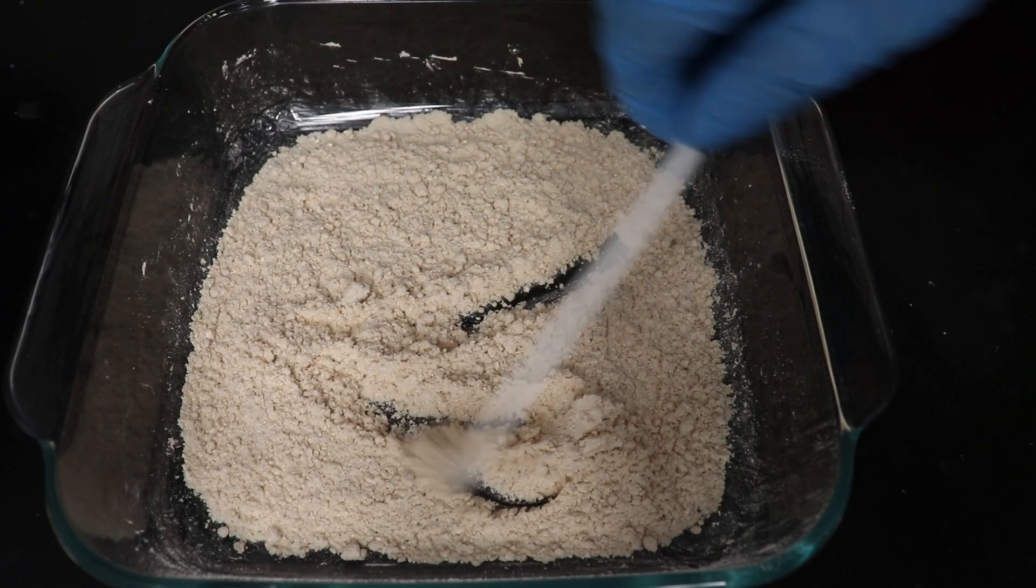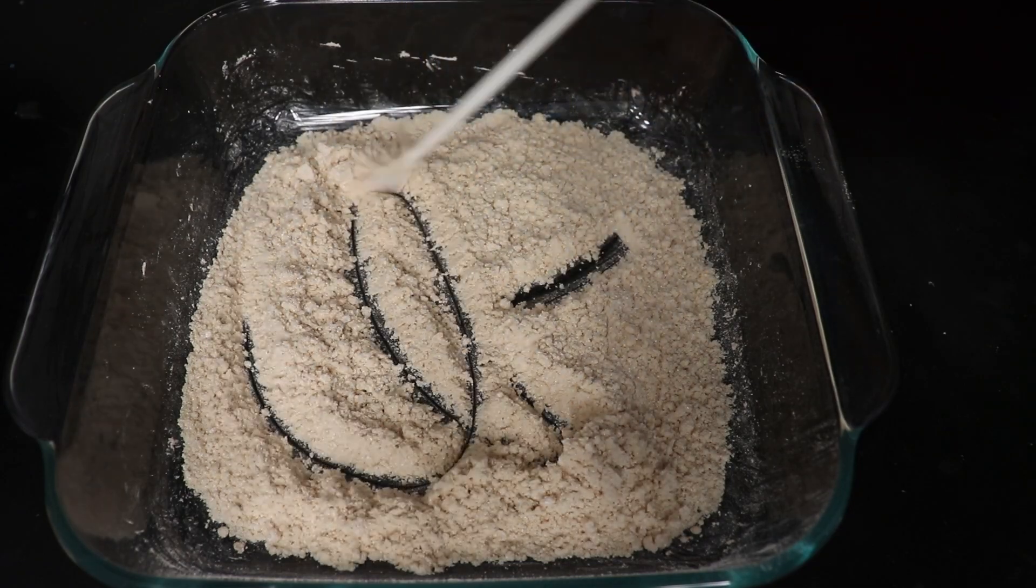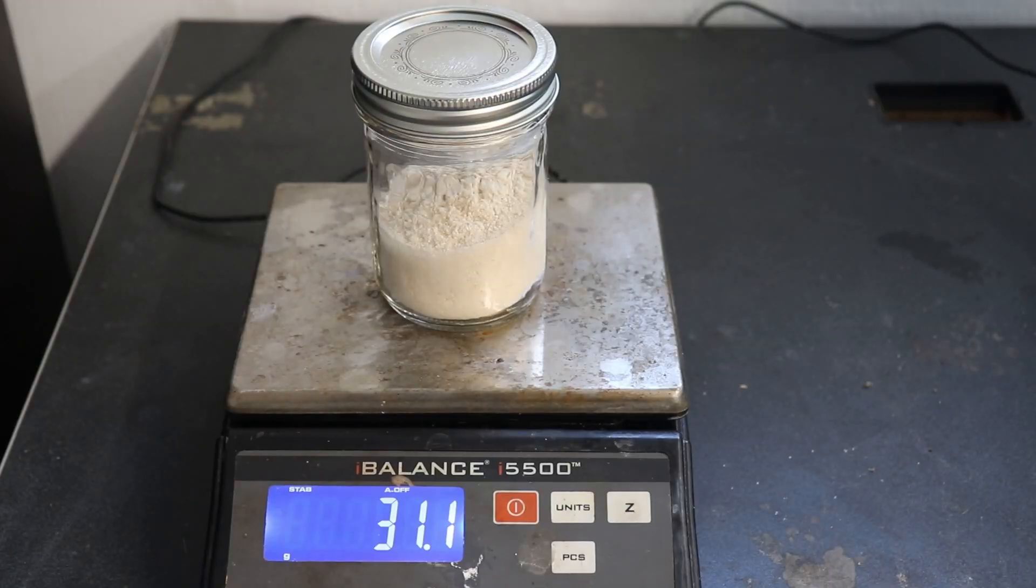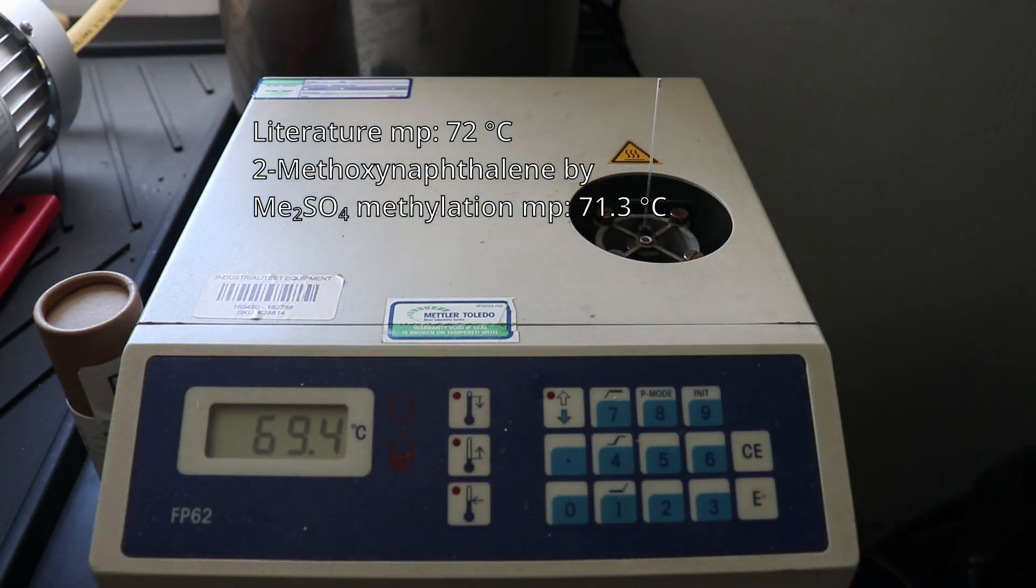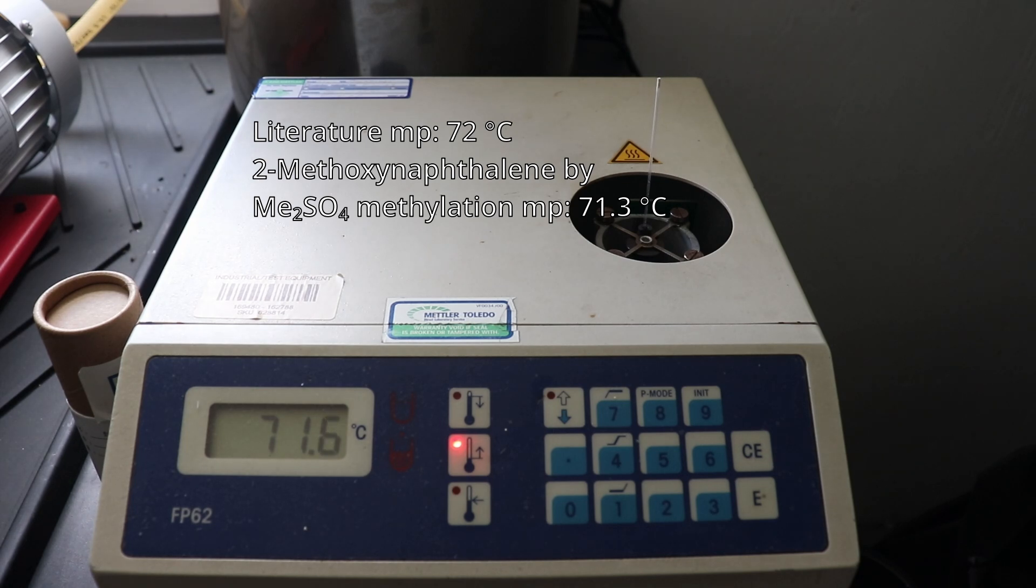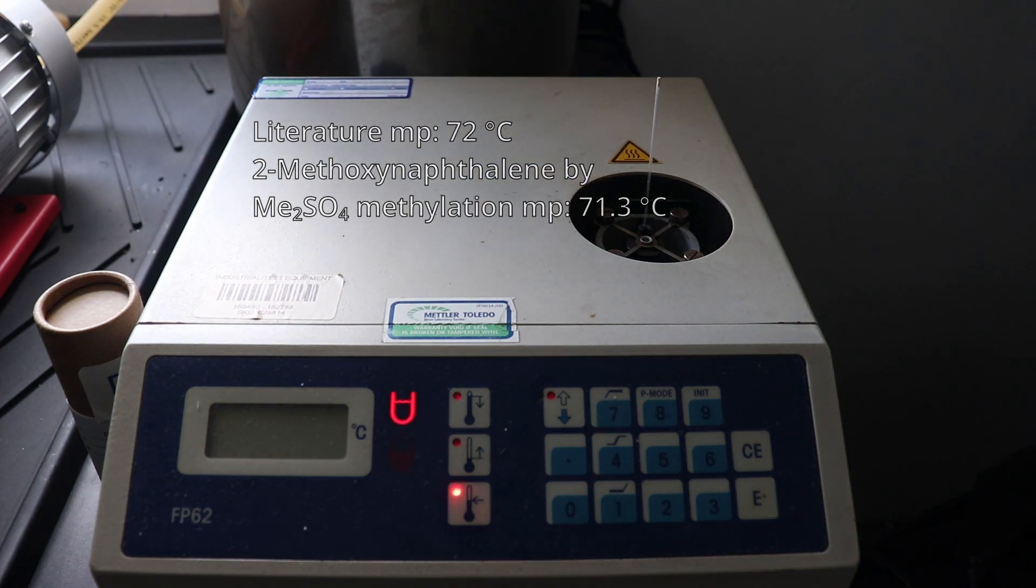The yield of the now dry 2-methoxynaphthalene was 31.1 grams, corresponding to a 79% yield, which is quite good compared to Vogel's 84% yield. The theoretical melting point of 2-methoxynaphthalene according to the procedure in Vogel is 72 degrees Celsius. The melting point of the 2-methoxynaphthalene that I just made was 71.3 degrees Celsius at a rate of 0.3 degrees Celsius per minute, which is a good result and allows us to say that we have successfully made 2-methoxynaphthalene.